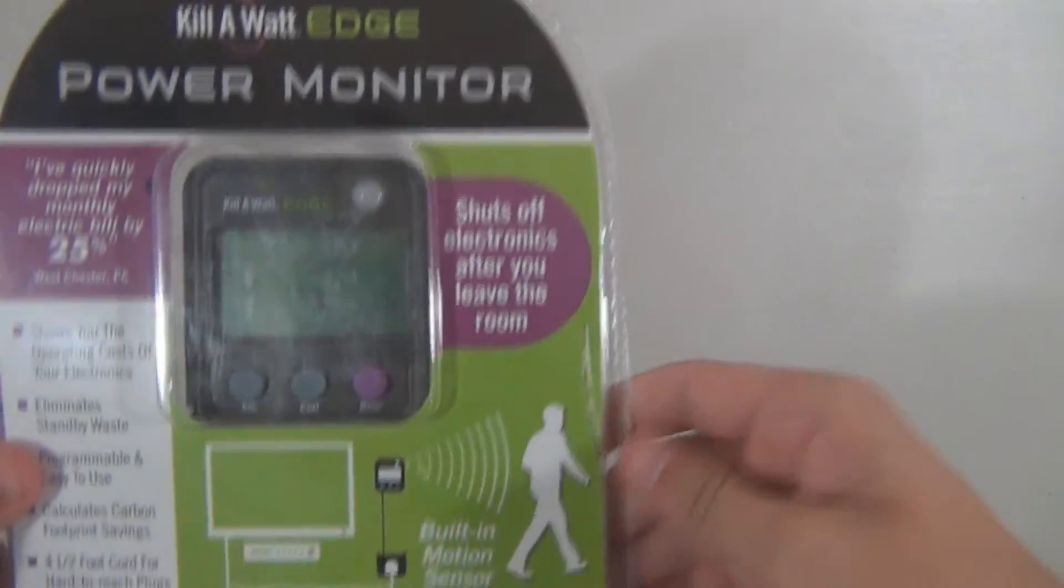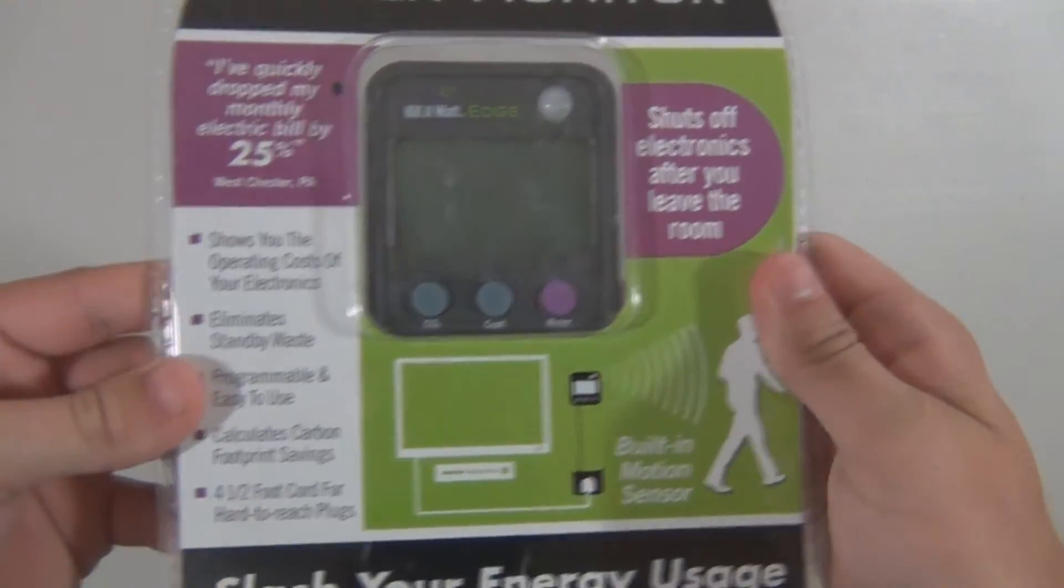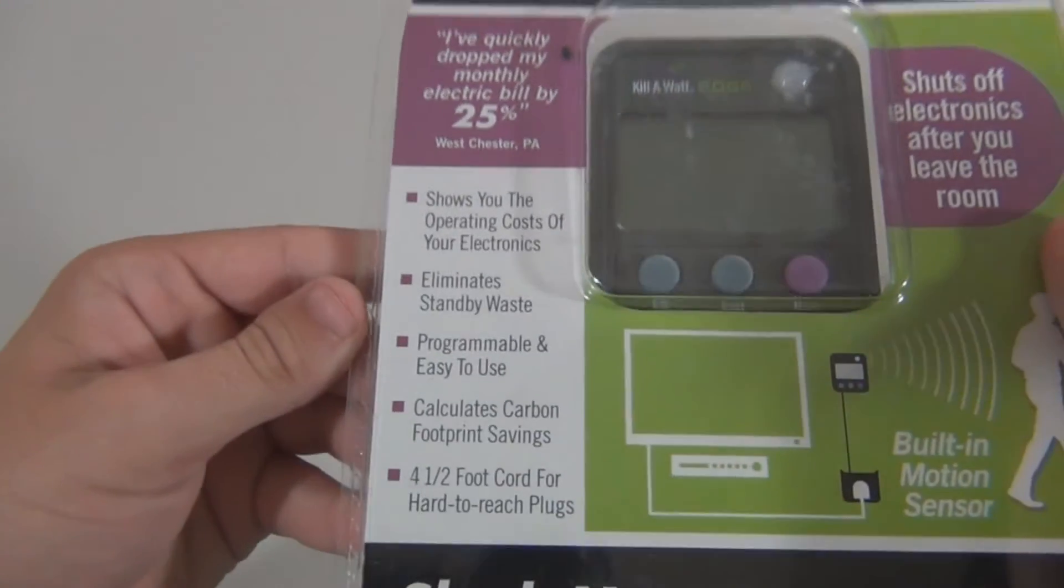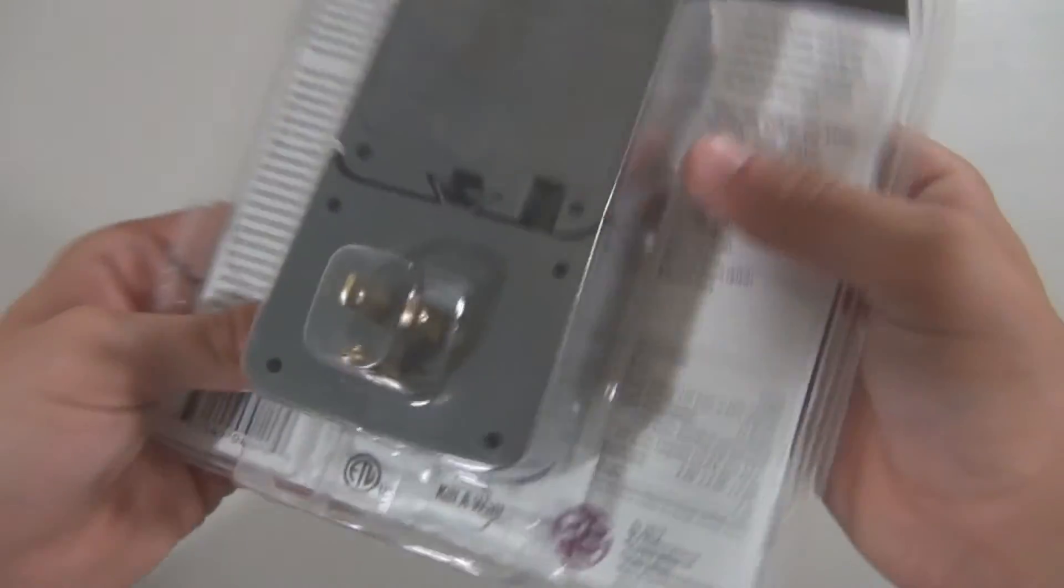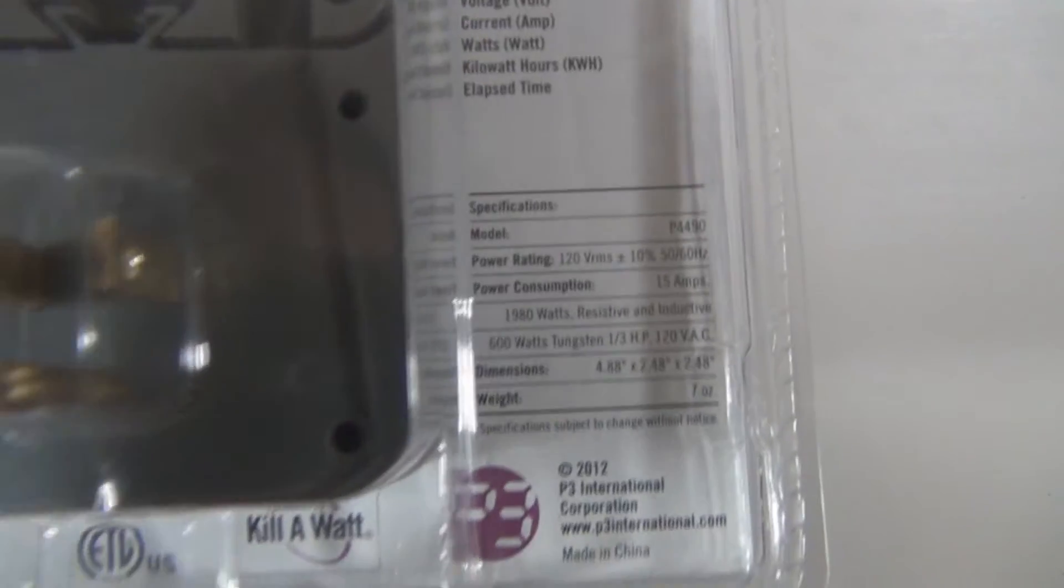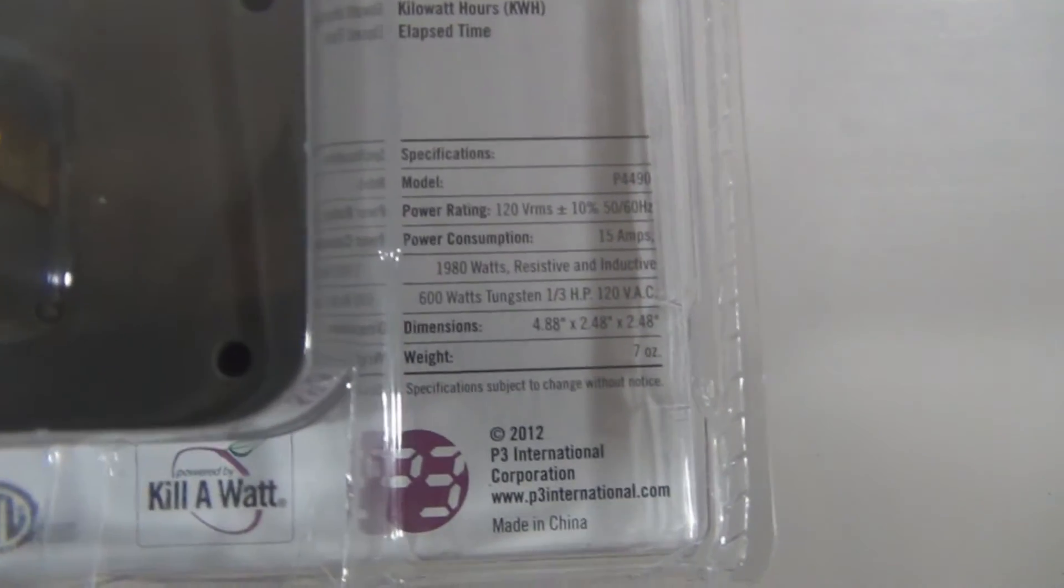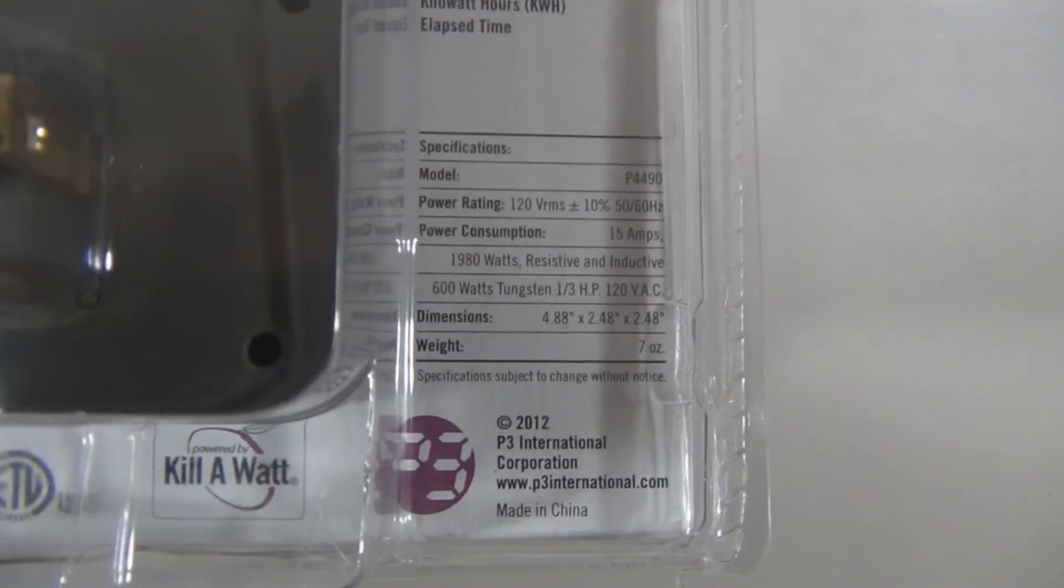Alright guys, before we kick off this review, let's first go over a few specifications. This can consume a maximum of 15 amps and 1,980 watts. This meter will display 5 units of measure, which include watts, kilowatt-hours, amperage, voltage, and elapsed time.